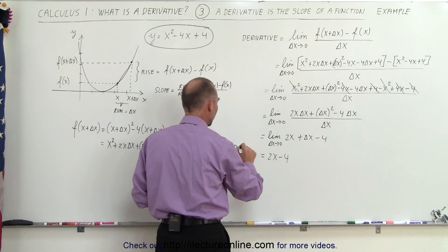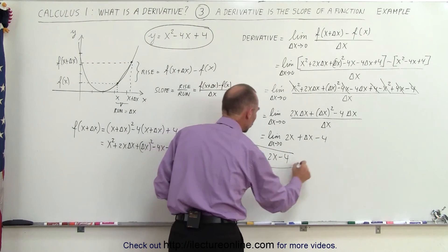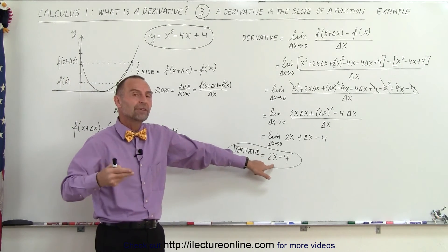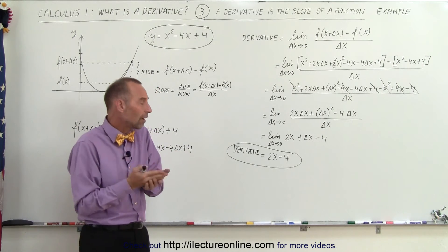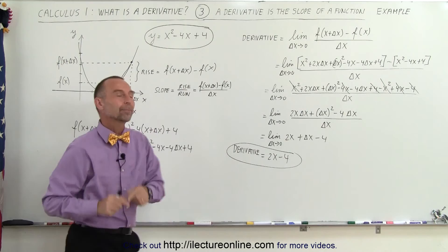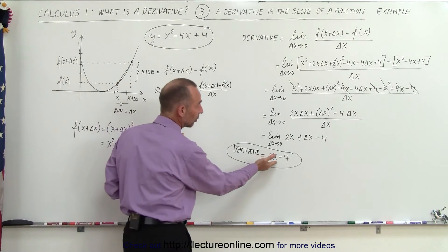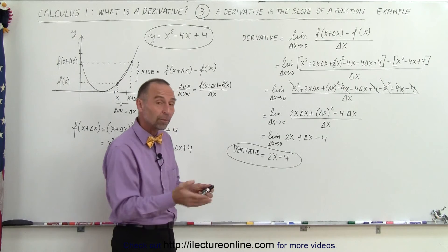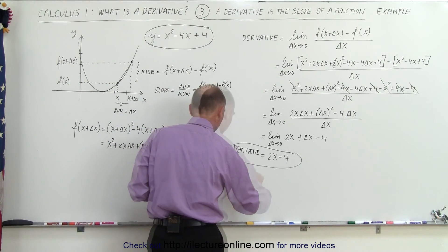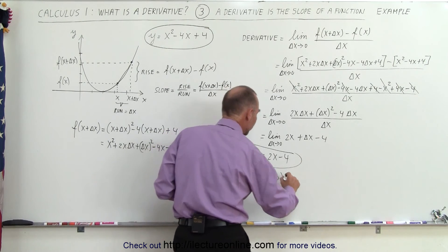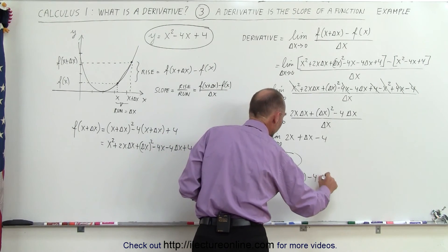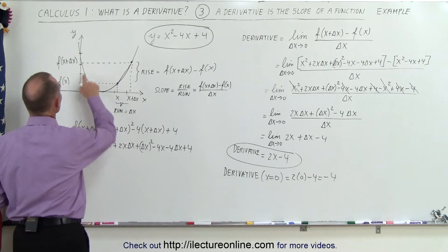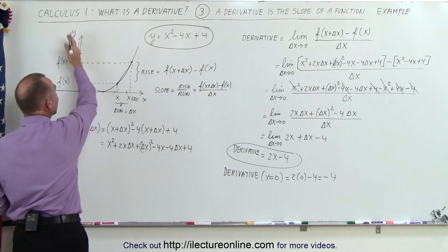And of course, that is equal to the derivative. The derivative is equal to the slope of the function. In this case, we found a function in itself — the derivative is actually a function. This requires us to plug in a value for x to find the slope at that particular point. For example, when x equals 0, the slope is 2 times 0 minus 4, which is negative 4. That means when x equals 0, the slope at that point on the parabola is negative 4.